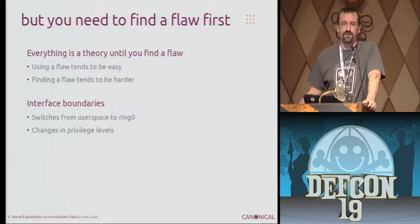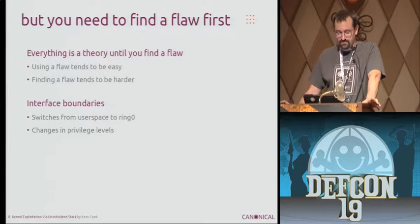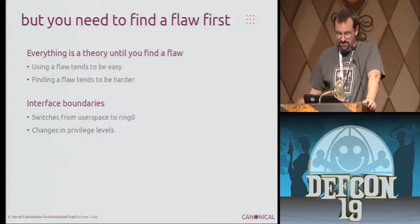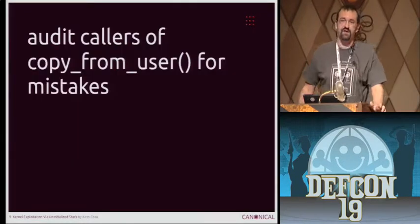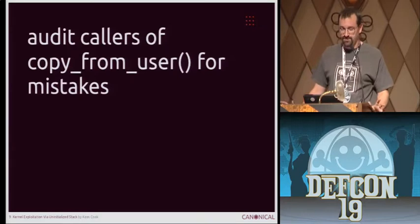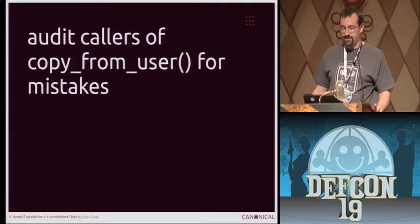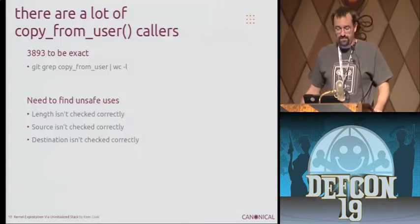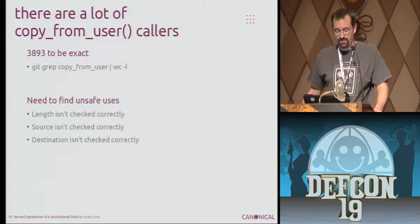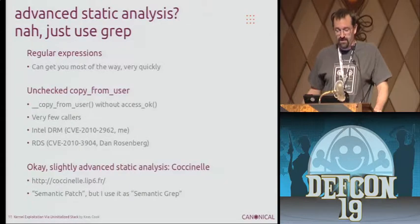But all that's unimportant if you don't have a flaw — obviously you need that arbitrary write to begin with. So I started looking at interface boundaries, where things make transitions. I was especially interested in copy_from_user because that's where you're pulling information from user space and putting it somewhere in the kernel, so anything that goes wrong there is going to be an issue. There are a lot of callers — about 4,000 — so it was a bit daunting to just start with that. I'm looking for things where length isn't checked, source isn't checked, destination isn't checked. We don't really need advanced static analysis — grep will work most of the time.